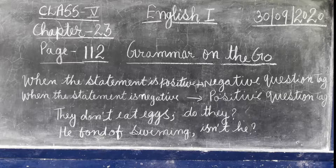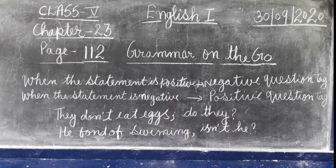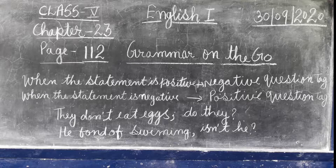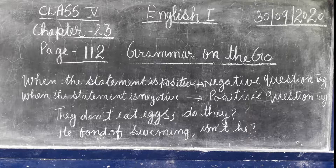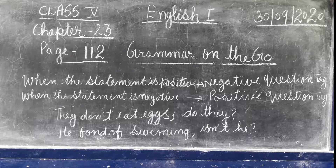Now see page number 113. We will look at the use of the words: much, many, little, few, some, and any. 'Much' means a lot of something. It is used with uncountable nouns. For example: 'I have too much work.' You cannot count the word — it is an uncountable noun.